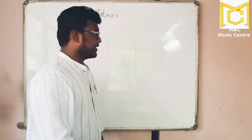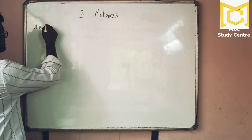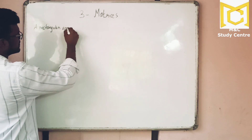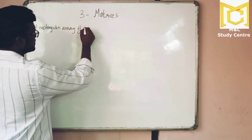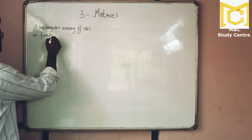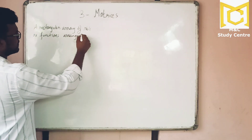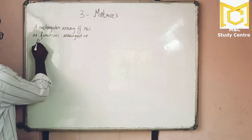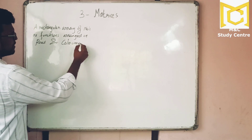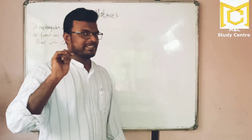Let's start with the definition of a matrix. For the definition, I am going to write here: a rectangular array of numbers or functions arranged in rows and columns. This is the definition for a matrix.